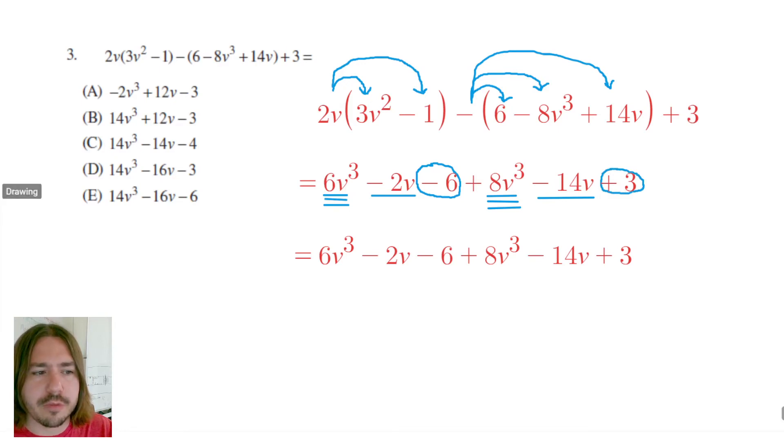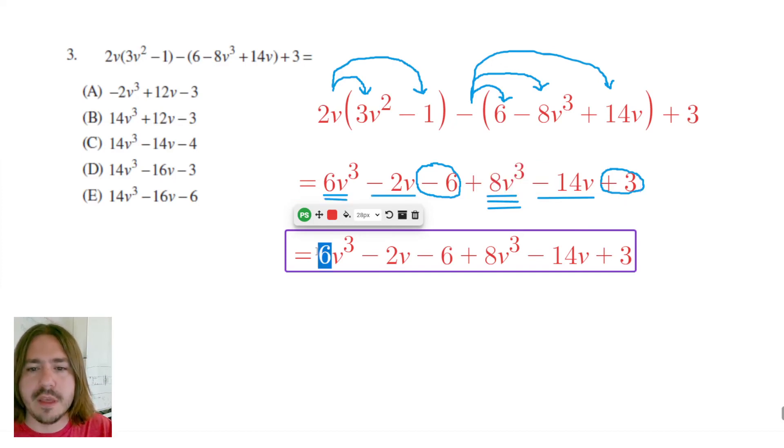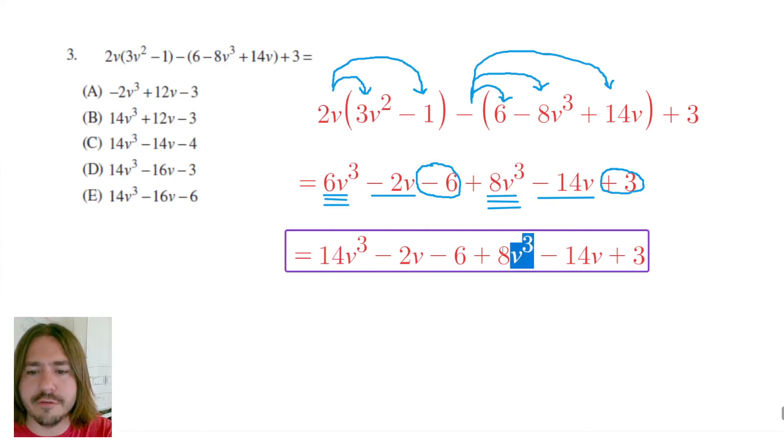First, I'll start with my cubic terms. 6v cubed plus 8v cubed. When you add like terms, you only need to add the coefficients. The variable and the exponent on the variable should stay the same. So 6 plus 8 is 14. So I get 14v cubed when I combine those two like terms.